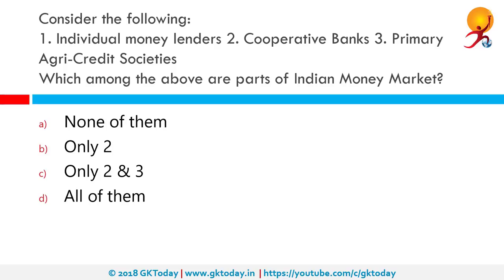Consider the following: 1. individual money lenders, 2. cooperative banks, 3. primary agri credit societies. Which among the following are parts of the Indian money market? The correct answer is all of them. Money markets are where borrowing and lending of short-term funds — from maturity of one day to one year — takes place. The instruments of money market are liquid and can be converted to cash easily. The interest rates are determined in money markets, which are divided into unorganized sector (indigenous bankers, money lenders) and organized sector (government, mutual funds, commercial and cooperative banks, insurance companies, etc.). The organized money market is regulated by RBI as well as SEBI.